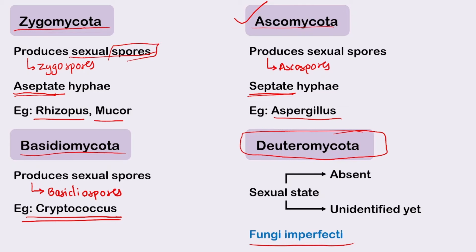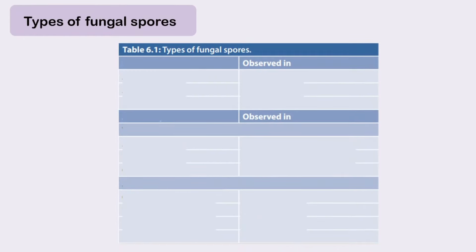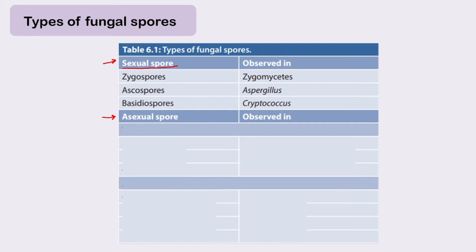Let's have a look at the types of spores. Broadly there are two types: sexual spores and asexual spores. Sexual spores: zygospores in Zygomycetes, ascospores seen in Aspergillus, and basidiospores seen in Cryptococcus — matching the taxonomical classification mnemonic ZAB.